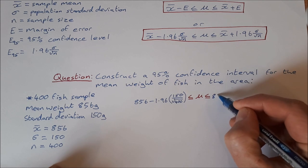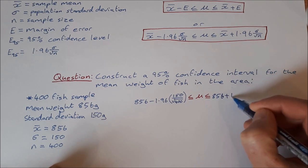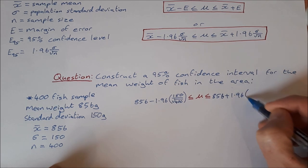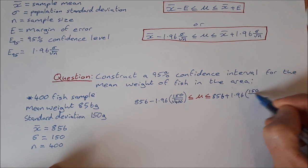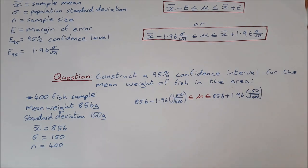So 856 plus 1.96 times 150 over square root of 400.